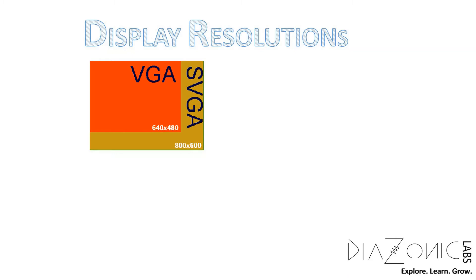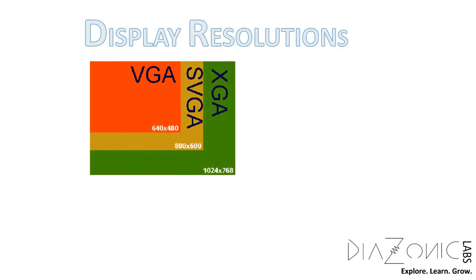IBM later introduced something called XGA to fend off interest from competitors. This had 1024 horizontal pixels and 768 vertical pixels, thereby drastically improving the screen resolution and image quality. Over the years, there were lots of different fractions and multiples of the total number of pixels in VGA, resulting in many different resolutions.